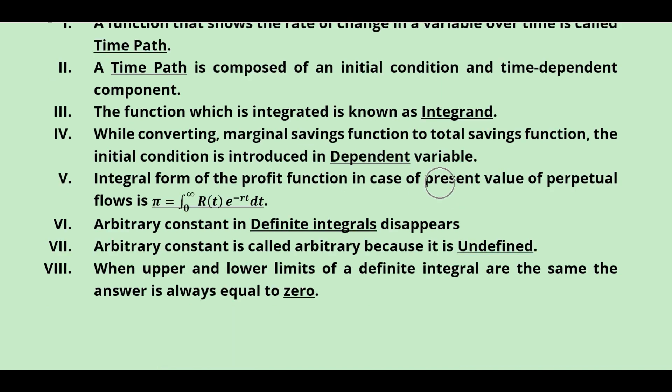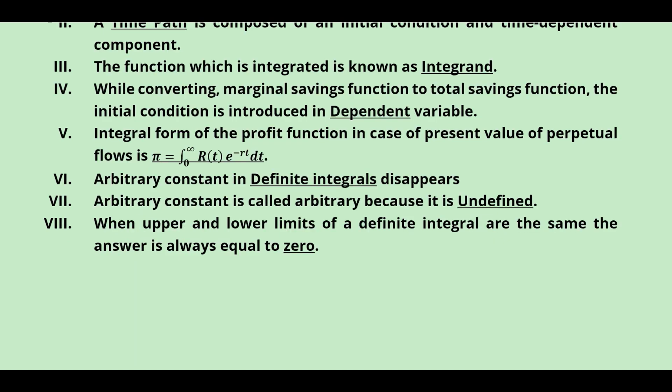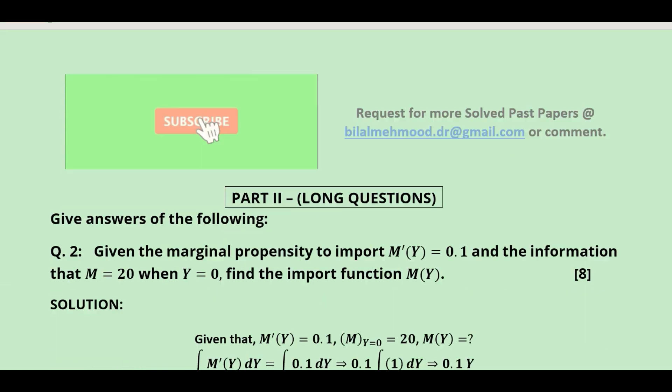The integral form of the profit function in the case of present value perpetual flow is the blank that needed to be filled. The arbitrary constant in definite integrals disappears because of cancellation — plus and minus. The arbitrary constant is called 'arbitrary' because it is undefined, not just unknown. When the upper and lower limits of a definite integral are the same, the answer equals zero because the subtraction yields zero.